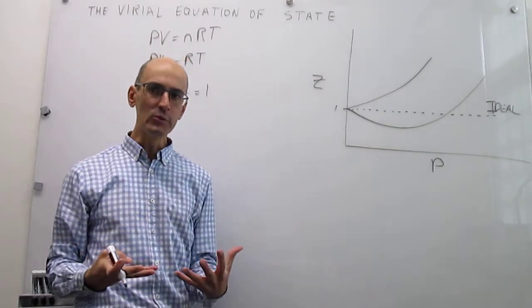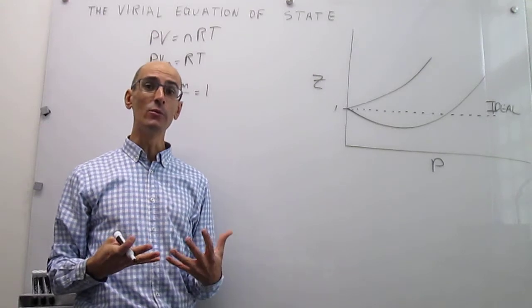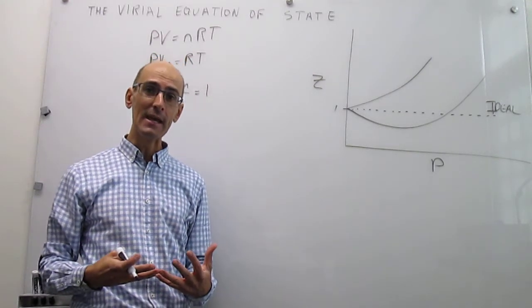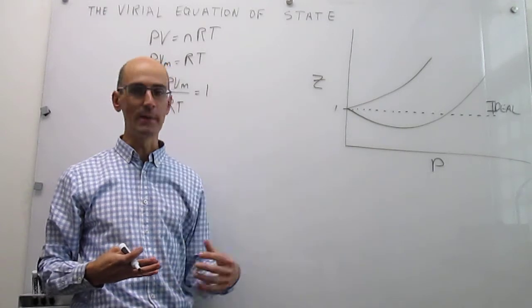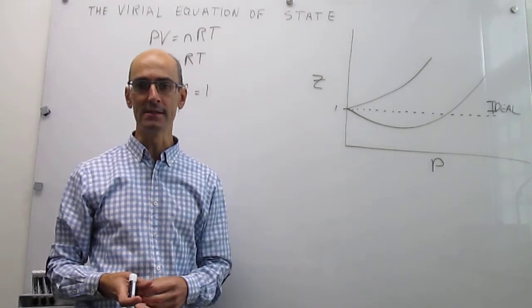If you go to higher pressures then the ideal gas equation of state is not satisfied. So the question is, what do we do? How do we come up with a new equation of state that is able to capture that deviation from ideality that many real gases experience?